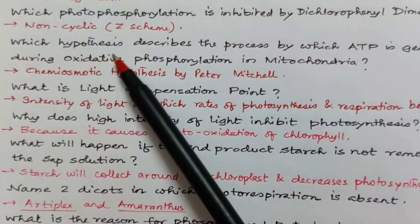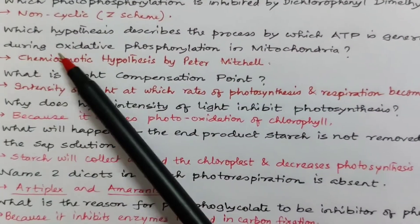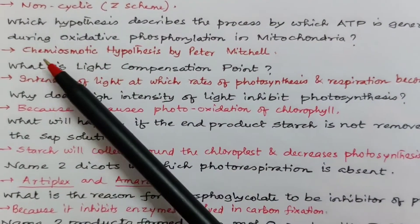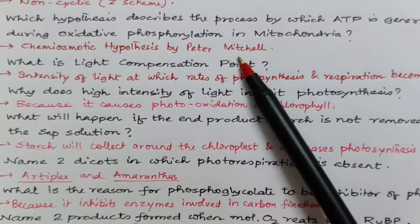Next is which hypothesis describes the process by which ATP is generated during oxidative phosphorylation in mitochondria. It is chemiosmotic hypothesis. This was first given by Peter Mitchell.